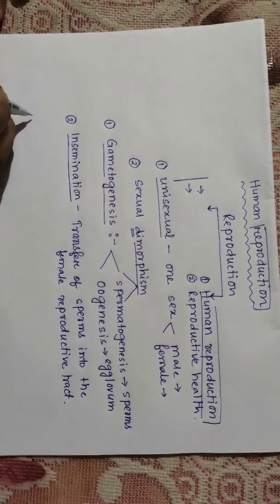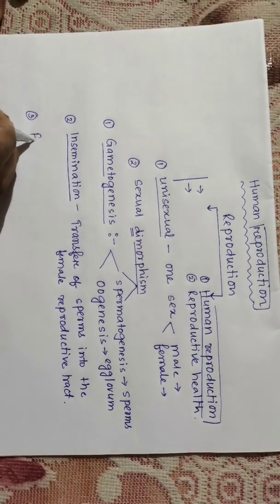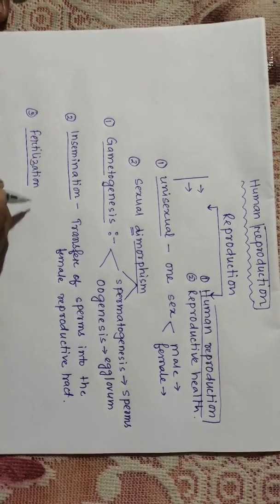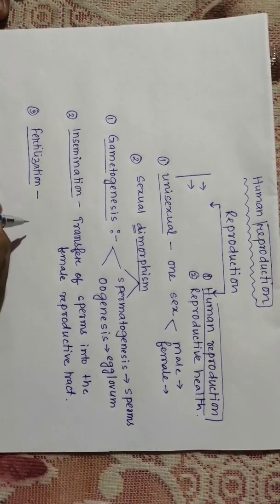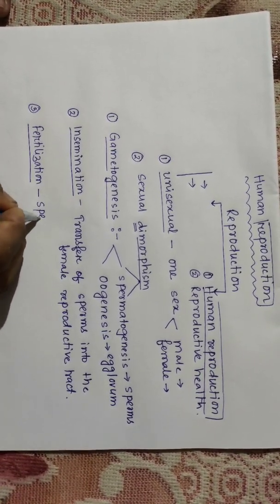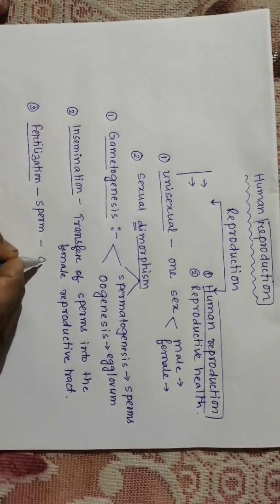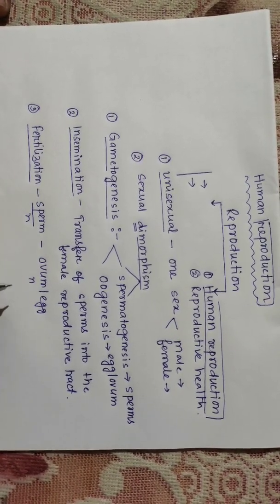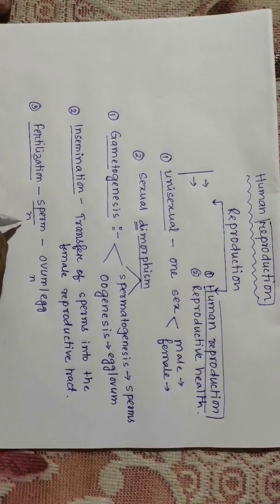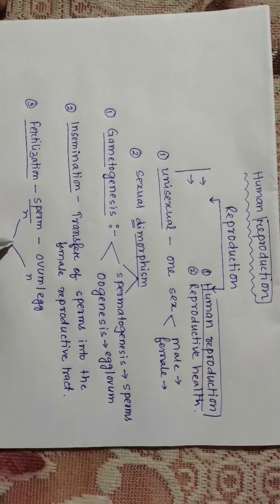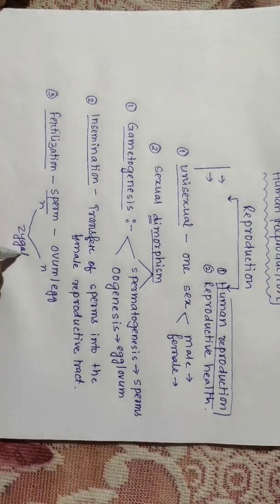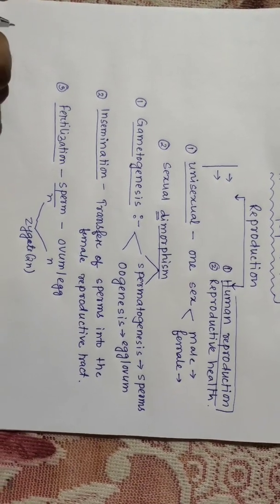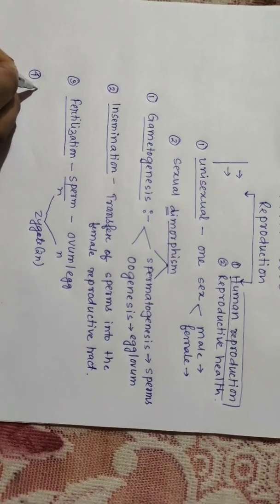The third phase is called fertilization. Fertilization means the fusion of the male gamete and the female gamete. The male gamete is sperm and the female gamete is ovum or egg cell. The sperm is haploid and the ovum is also haploid. When the sperm and ovum fuse together, it results in the formation of a zygote, which is diploid.